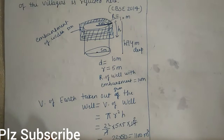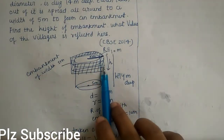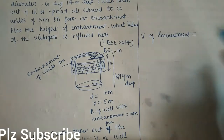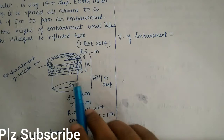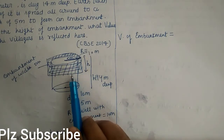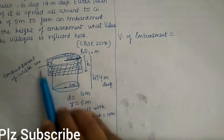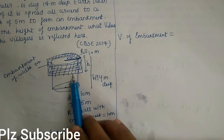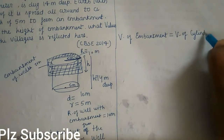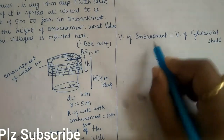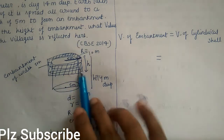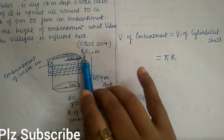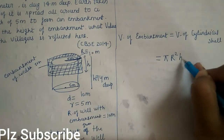Now, this earth was used to make the embankment, so we need to find the volume of the embankment. The embankment is in the shape of a cylindrical shell — we subtract the inner cylinder volume from the outer cylinder volume. The outer cylinder has radius capital R, and height H (height of embankment). Volume of embankment = π R² H minus π r² H.